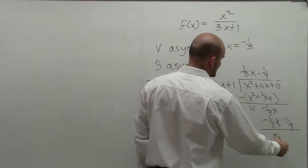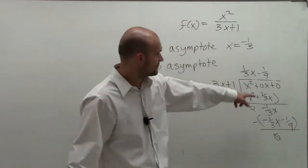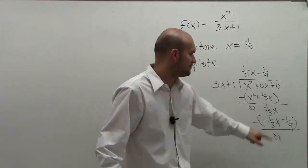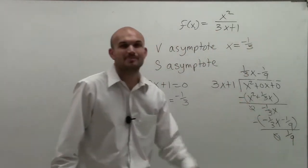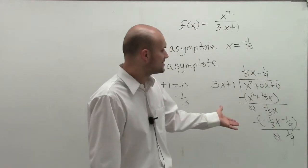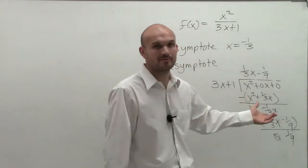I subtract the whole row. Negative 1/3 x minus negative 1/3 x is 0. Zero minus negative 1/9 is positive 1/9. However, does 3x go into positive 1/9? No, it doesn't. So since it does not go into positive 1/9, that's going to be my remainder.